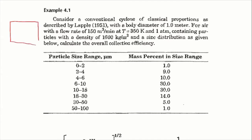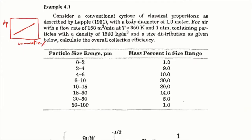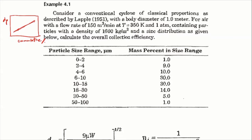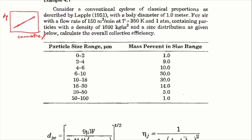If you remember the size distribution, we had a semi-log plot where the x-axis is cumulative fraction and the y-axis is particle size. When all data points align on a straight line, it's a log-normal distribution. For treating these PM-containing flue gases, we need to first know the size distribution, and then we can calculate the removal efficiency for all the different particles.